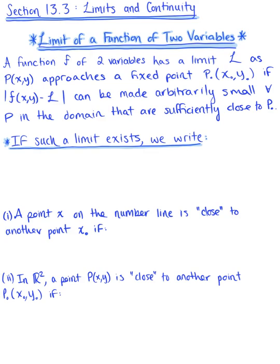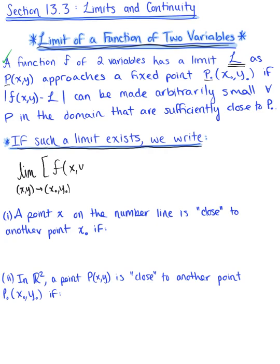To get us started, let's look at the limit of a function of two variables. We say that a function f of two variables has a limit L — where L is some real number — as our point p approaches some fixed point p0, if the distance between the function f(x, y) and our real number L can be made arbitrarily small for all points p in the domain that are sufficiently close to p0. If such a limit exists, we write: the limit as (x, y) approaches (x0, y0) of f(x, y), or alternatively, the limit as p approaches p0 of f(x, y), equals L.